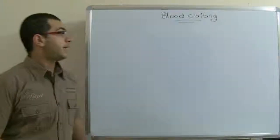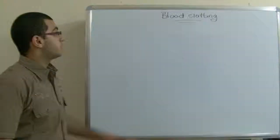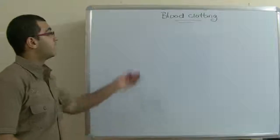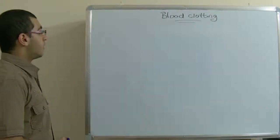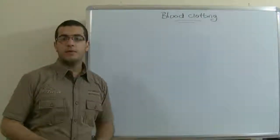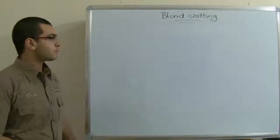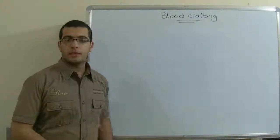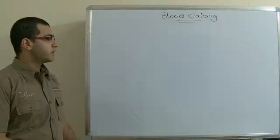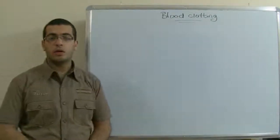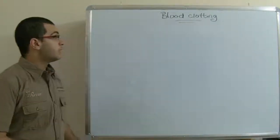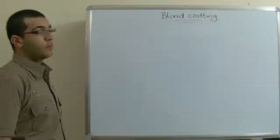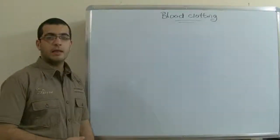Hello everybody and welcome back. Today we will talk about blood clotting, or how does the blood clot. When a blood vessel is cut, bleeding takes place. If this bleeding continues, it may lead to shock which leads to death. So the blood carries out this clotting to prevent the bleeding.